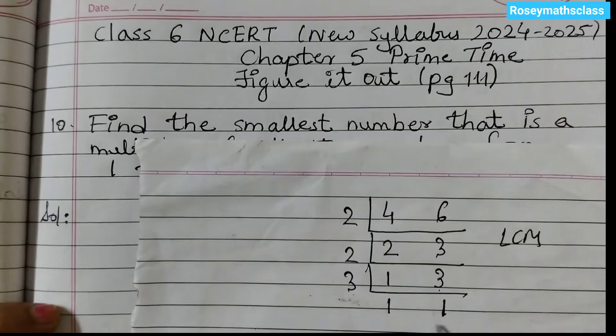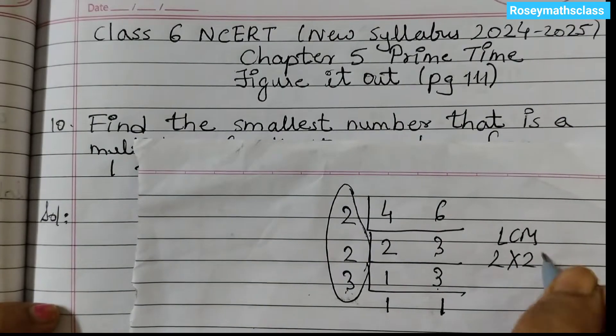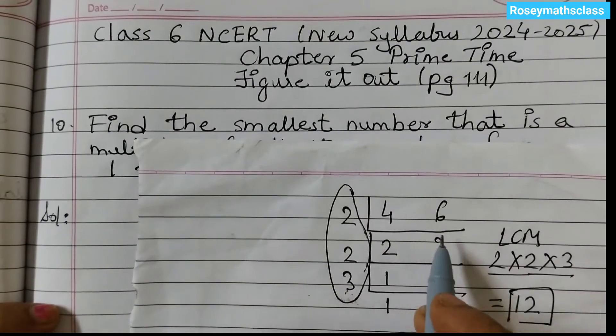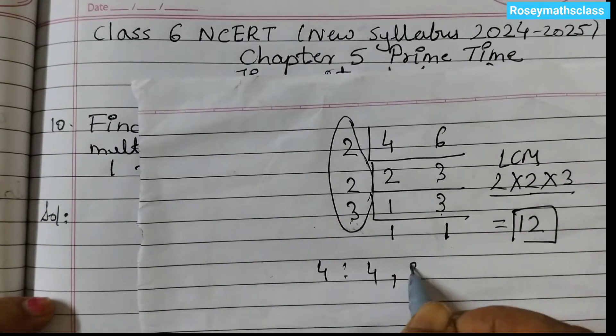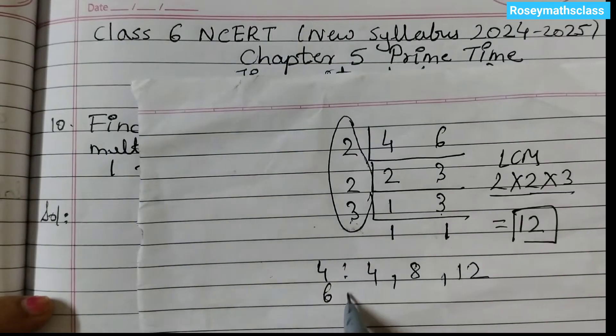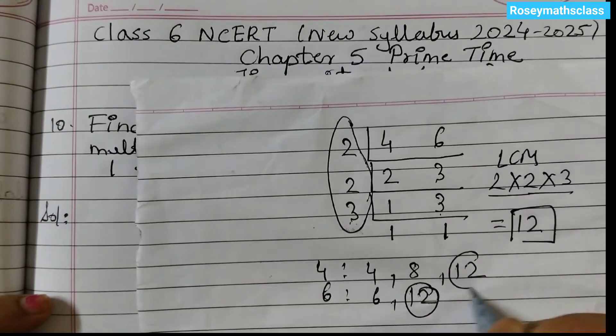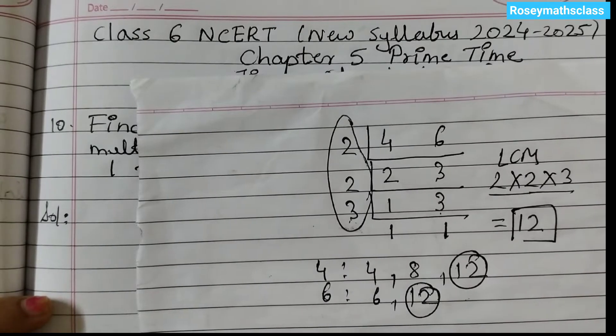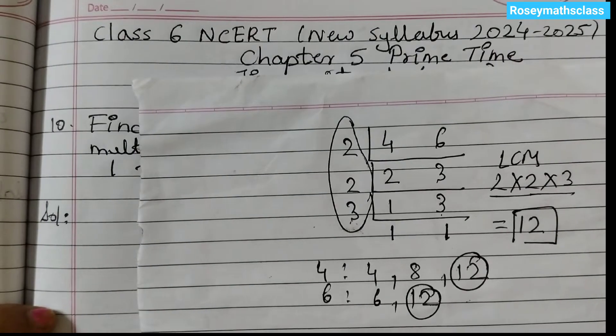So now LCM is, you must always get 1 at the end, 2 into 2 into 3, multiply all these numbers. So 2 into 2 into 3, 2 2's are 4, 4 3's are 12. So 12 is the LCM of 4 and 6 and you can check it like this also. Table of 4: 4 1's are 4, 4 2's are 8, 4 3's are 12. 6 table: 6 1's are 6, 6 2's are 12. So this is the first common multiple. These are the different words that we use. Same method we are going to use for question number 10.